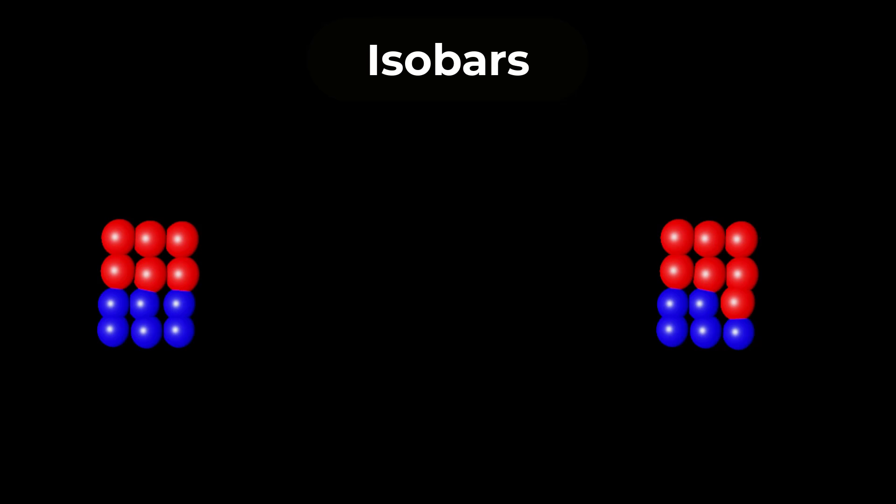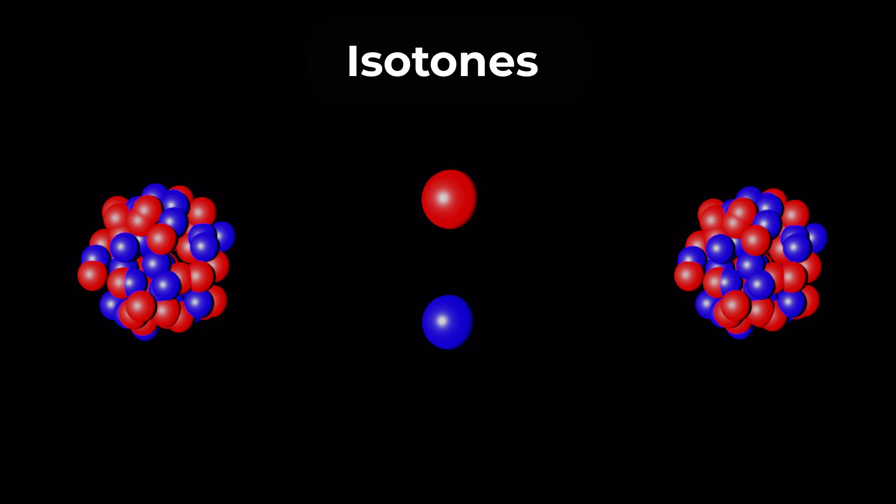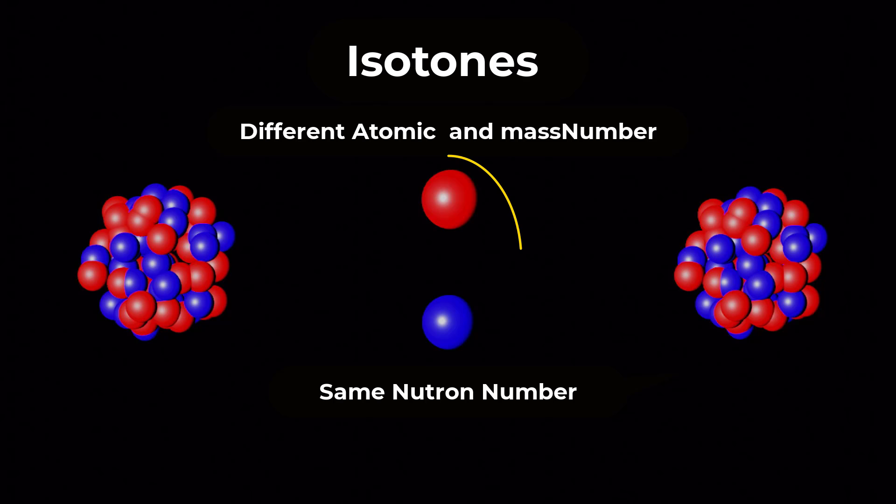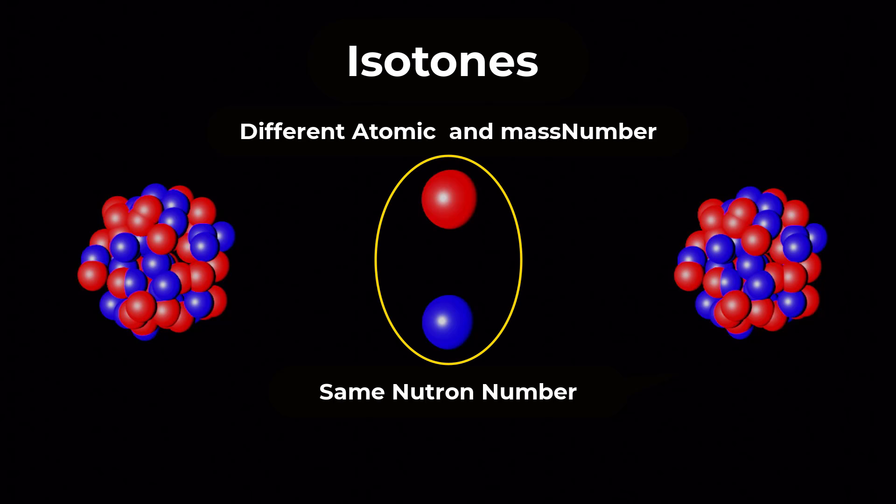For example, carbon-12 and nitrogen-12 are isobars. Isotones are atoms that have the same number of neutrons but different atomic or mass numbers. For example, carbon-12 and oxygen-14 are isotones.